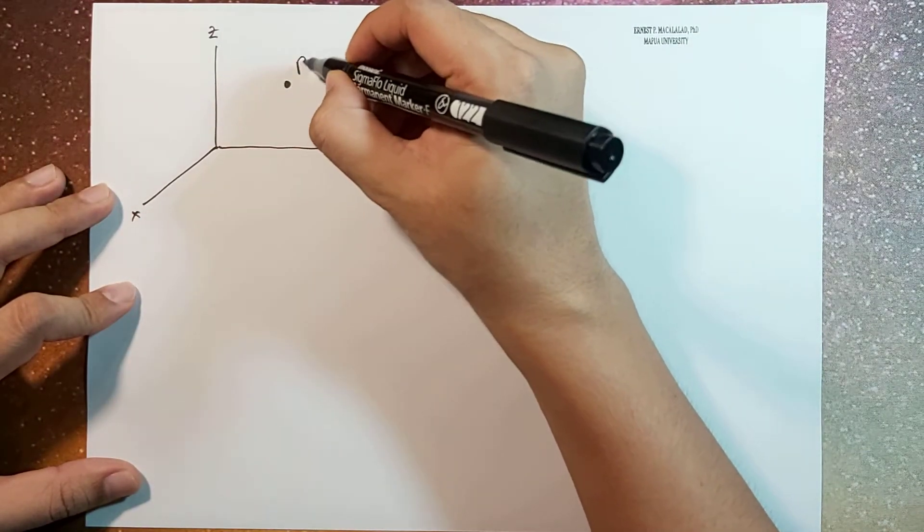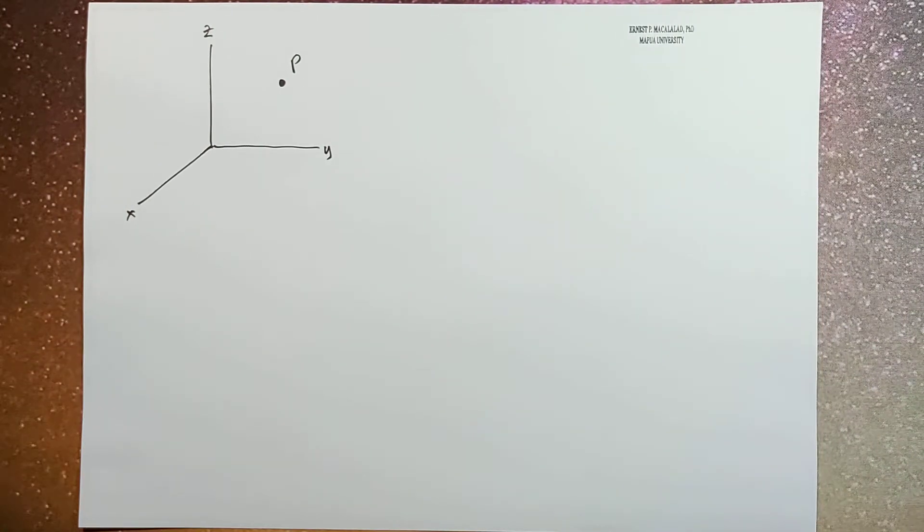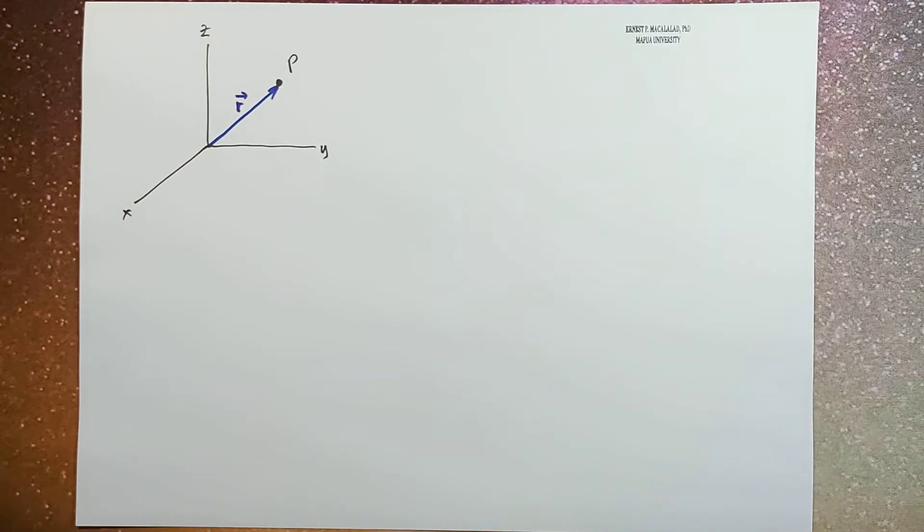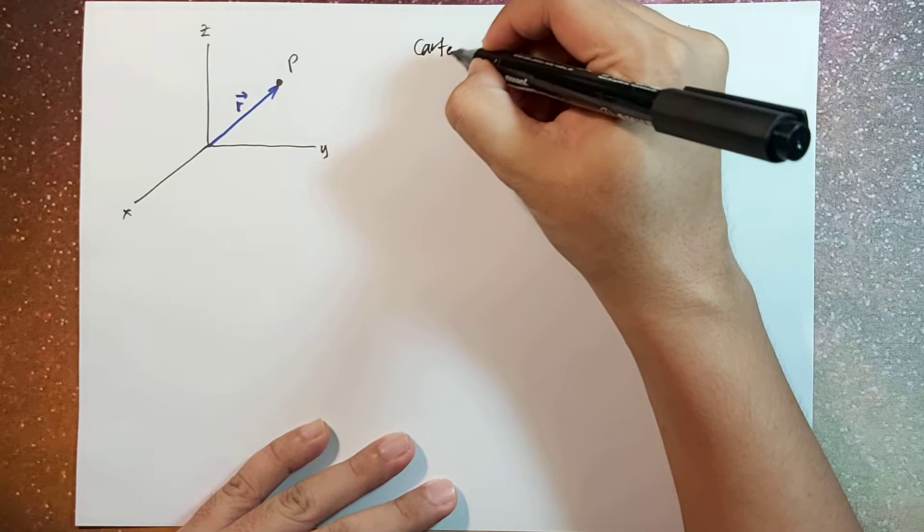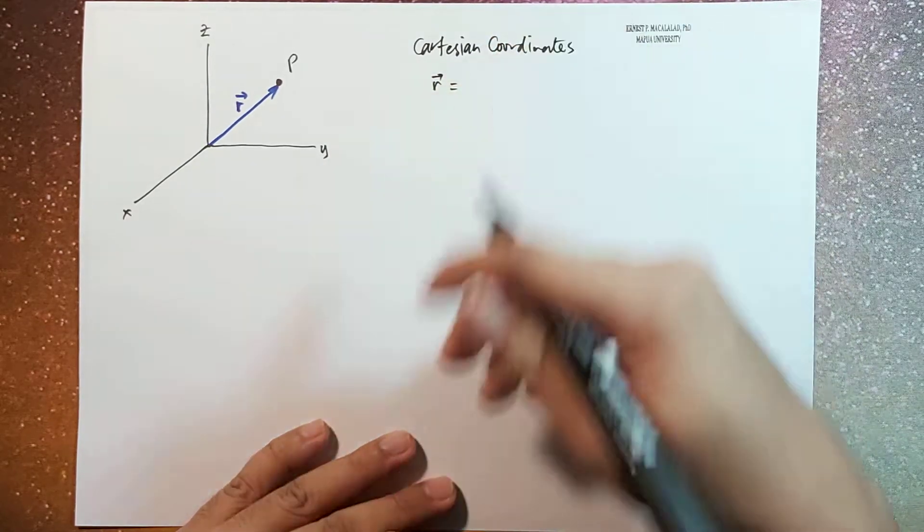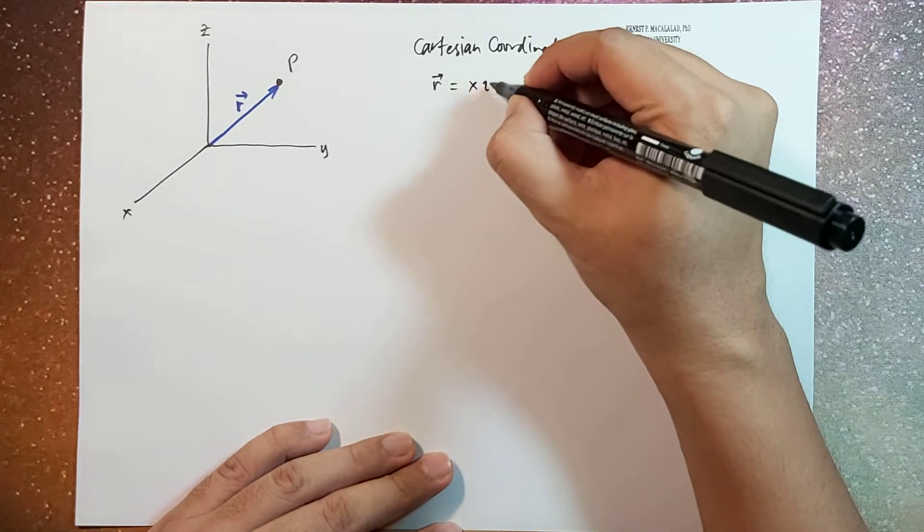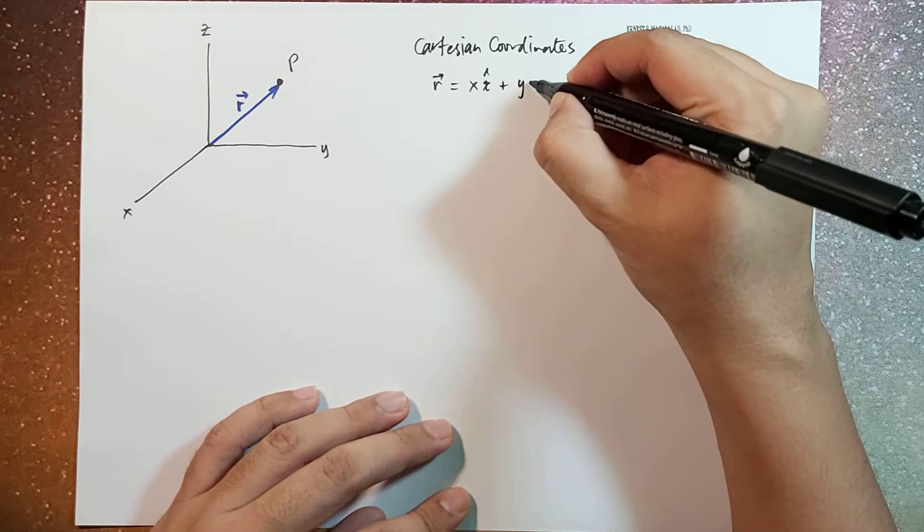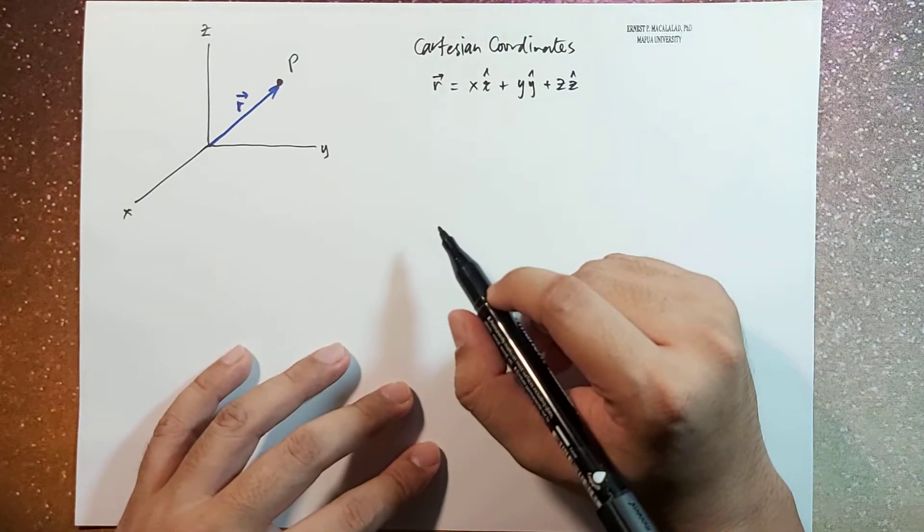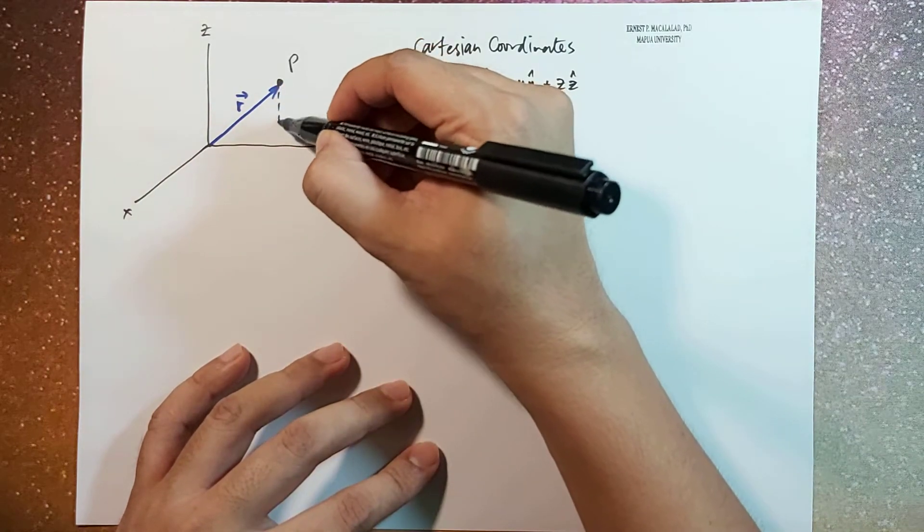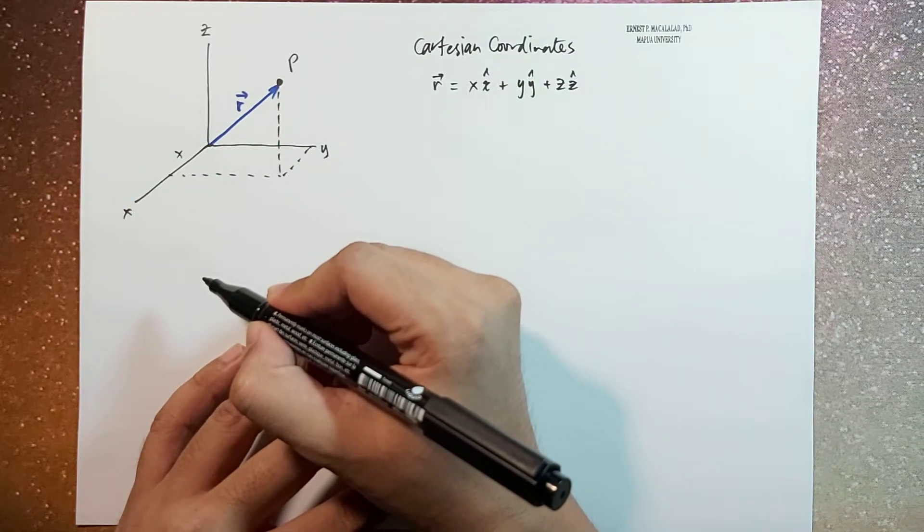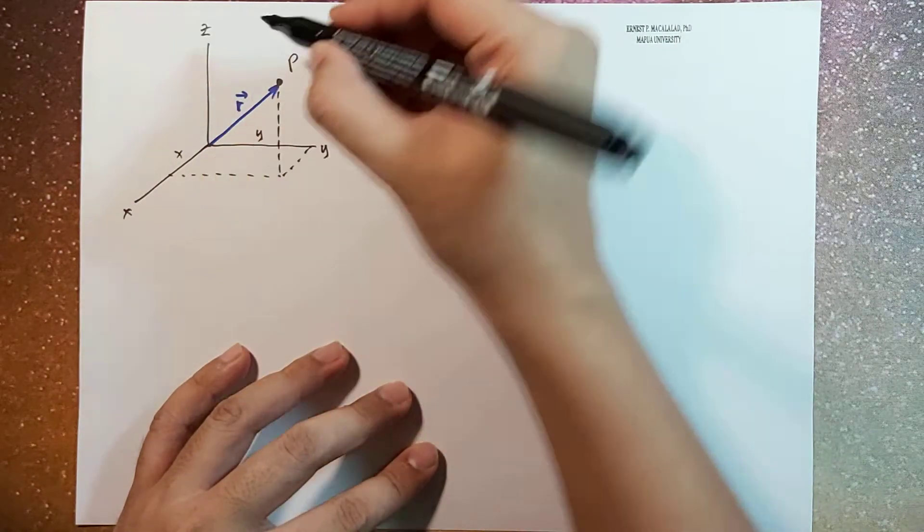Now let's consider a certain point P. We're going to define the position of this point with the position vector r. In the Cartesian coordinate system, the r vector is given by x x-hat plus y y-hat plus z z-hat, where x, y, and z are the components of the position vector. This is x, this is y, and this is z.